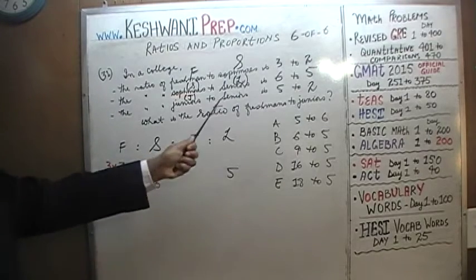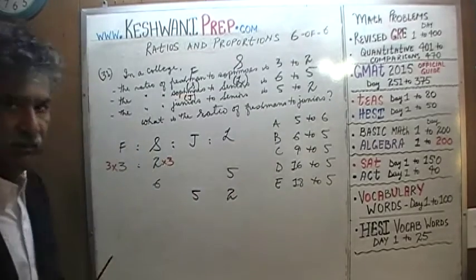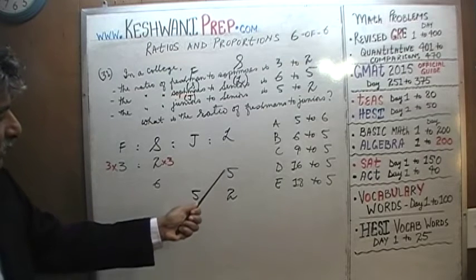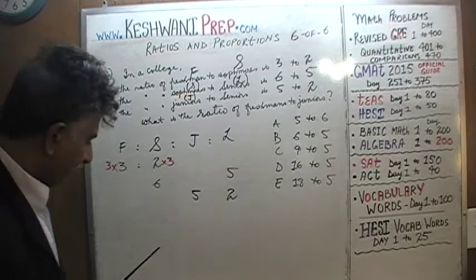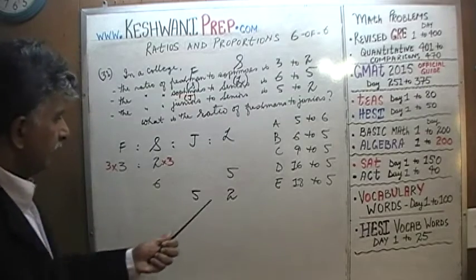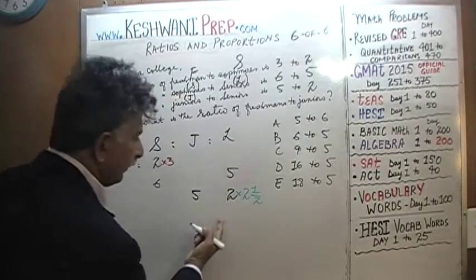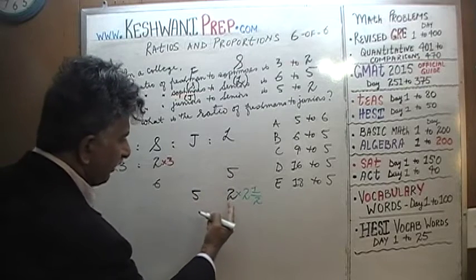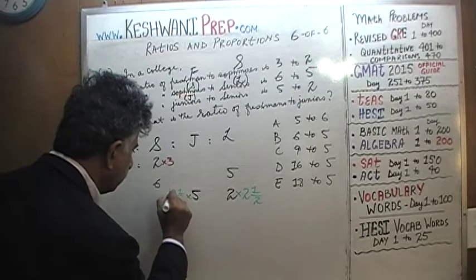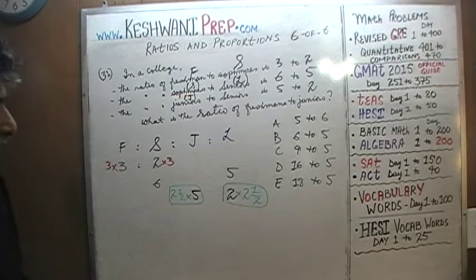Juniors to seniors is 5 to 2 — pay attention, it is not 2 to 5. Here we have 5 seniors and 2 juniors... actually 5 to 2 means 5 juniors to 2 seniors. We need to make the seniors consistent, so let's multiply by 2 and a half. 2 times 2 and a half is 5, matching the seniors from the previous part. Since we multiplied seniors by 2 and a half, we must multiply juniors by 2 and a half as well. You must keep track of everything. The story is over.